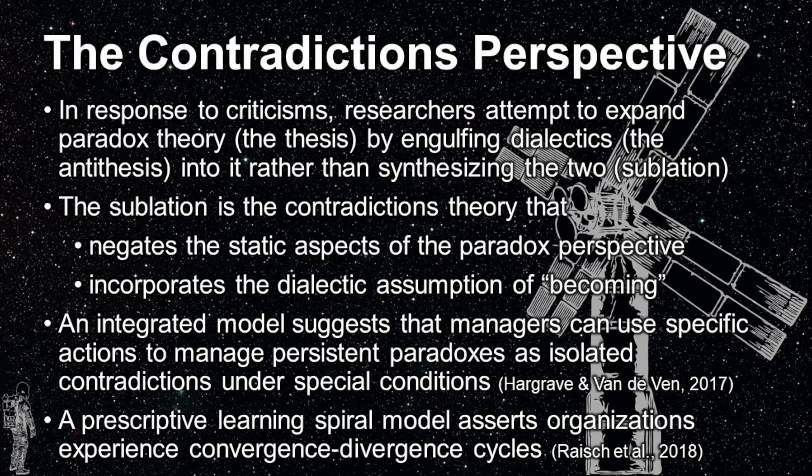The initial contradictions theory was an integrated model proposed by Hargrave and Vandeven, suggesting that managers can use specific actions to manage persistent paradoxes as isolated contradictions under special conditions. The isolated contradictions part was a limitation addressed by a subsequent theory — the prescriptive learning spiral model — asserting that organizations experience convergence and divergent cycles. In the convergence portion, managers address contradictory elements as described in the dynamic equilibrium model, and in the divergent portion, new discoveries and changing contradictory elements disrupt the dynamic equilibrium and managers basically try to cope.